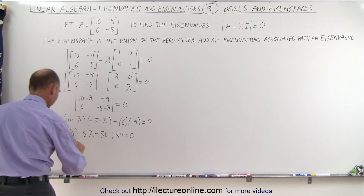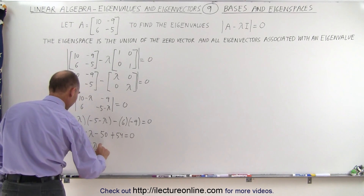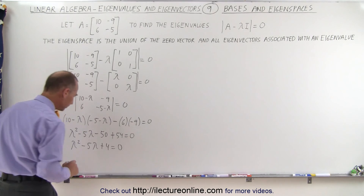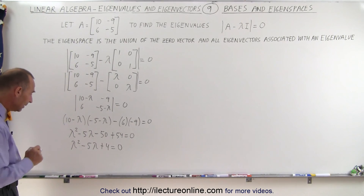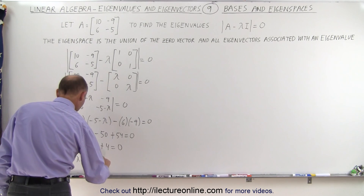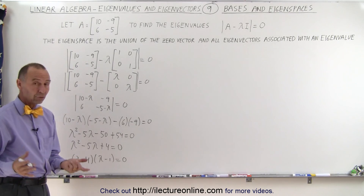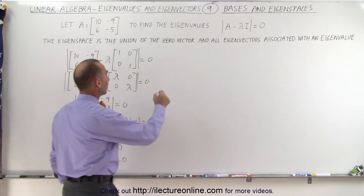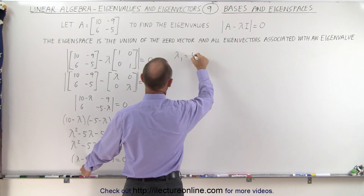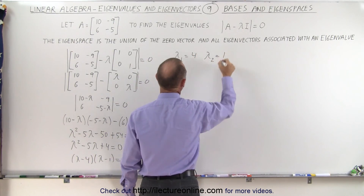Simplifying that, we end up with the quadratic equation λ² − 5λ + 4 = 0. We can factor that — it becomes (λ − 4)(λ − 1) = 0. And then you realize there are two possible eigenvalues. Let's call eigenvalue number one λ₁ = 4, and eigenvalue number two λ₂ = 1.